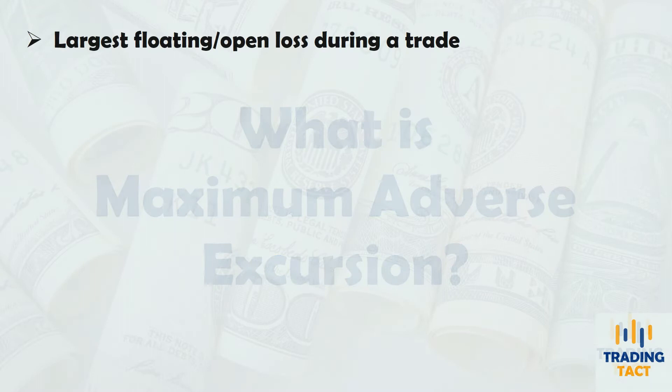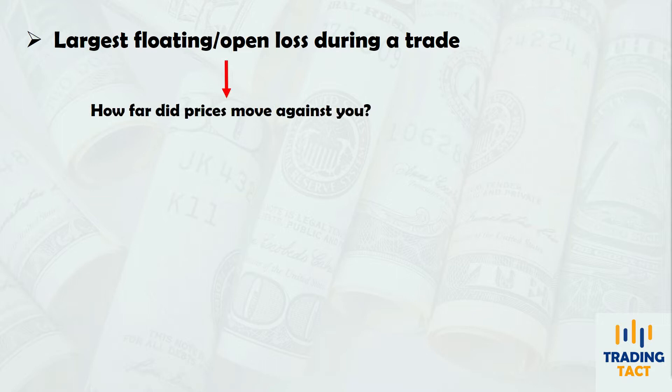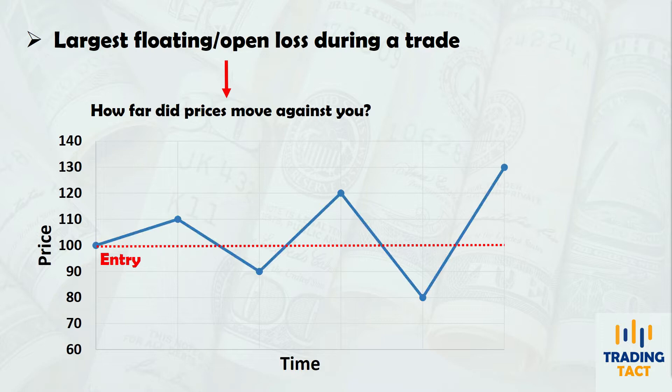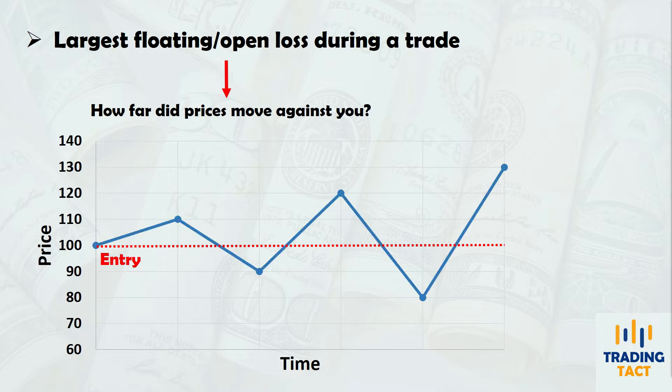Maximum adverse excursion, or MAE, is the largest floating loss during a trade. It measures the furthest that prices moved against you. Let's say you enter a long trade at $100 and the market progresses as shown. Your MAE in this case would be $20 — the difference between the entry price and the lowest market price during the trade. If you never experience a floating loss during a trade, your MAE will be zero.